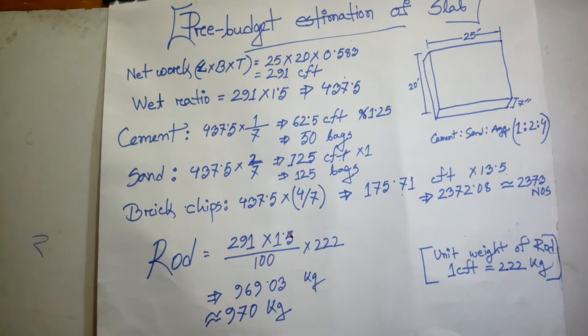We're going to show you how to estimate the pre-budget estimation, so we can design detailing. Now, you should know that for a slab, the rebar is around 1.5 percent. So this calculation is just helpful for a pre-budget for the project, not for the real estimation. For real estimation, you need the structural design details.